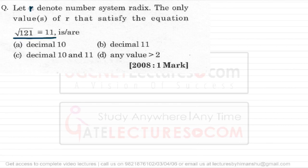One thing this question teaches us is: don't rush for the answer. We already know that the square root of 121 is 11 in base 10, in the decimal system. Notice the intelligence of the question paper setters — they've given option A itself as decimal 10. Don't rush to take the answers; in a hurry you might pick option A and end up getting negative marks.